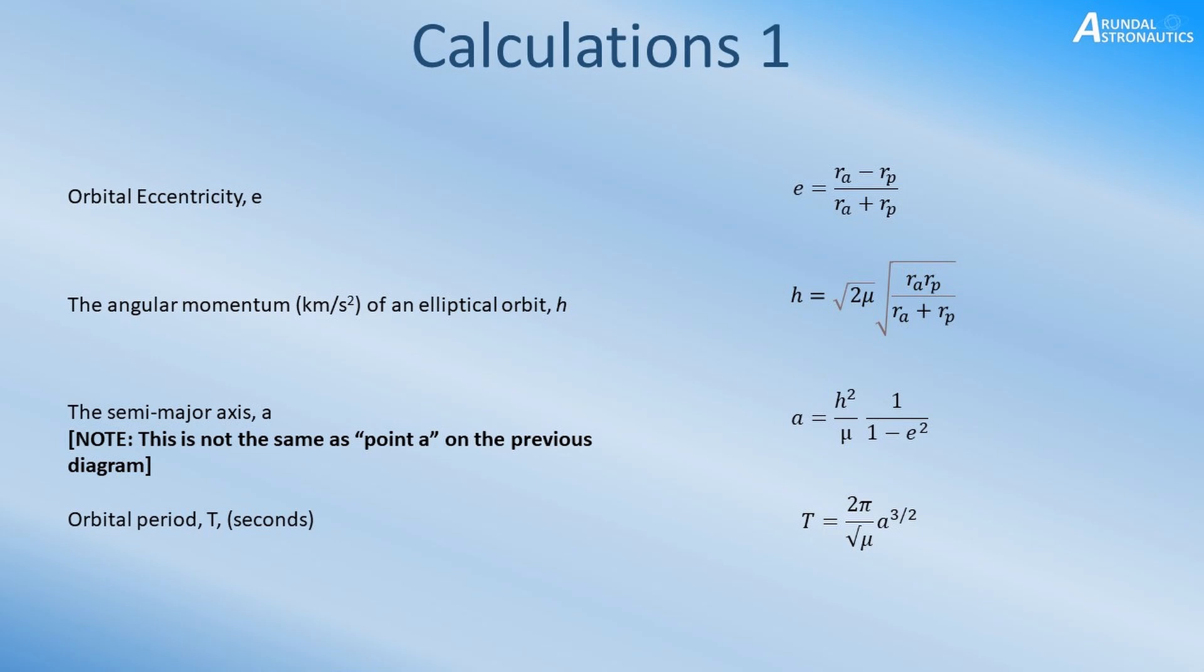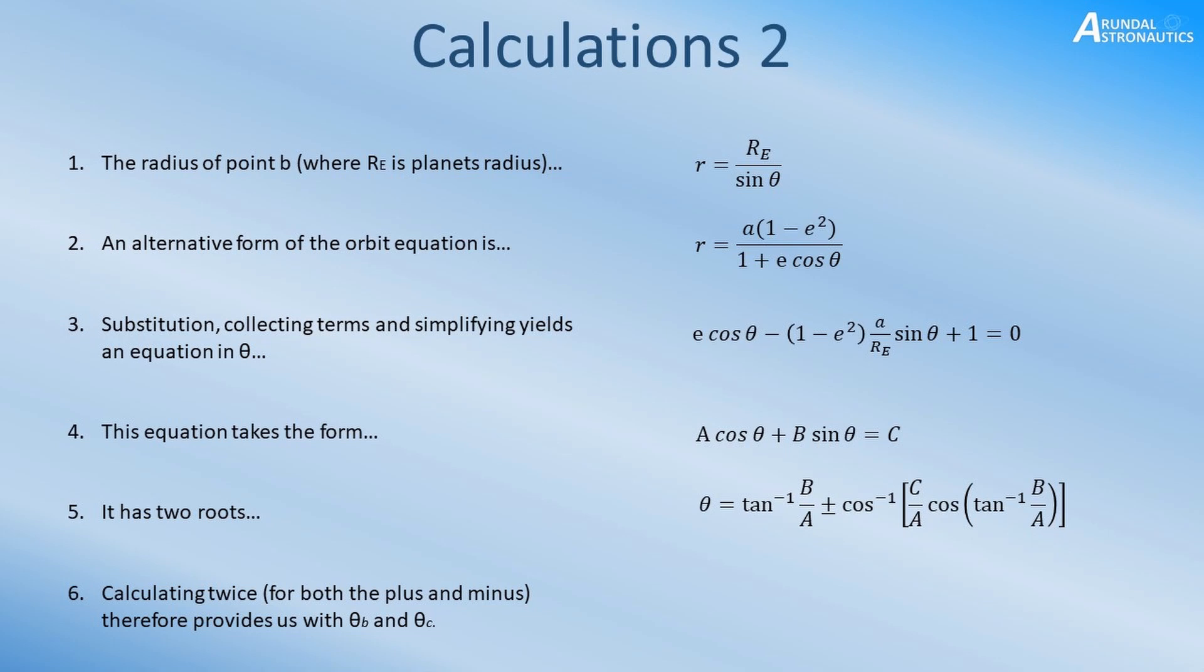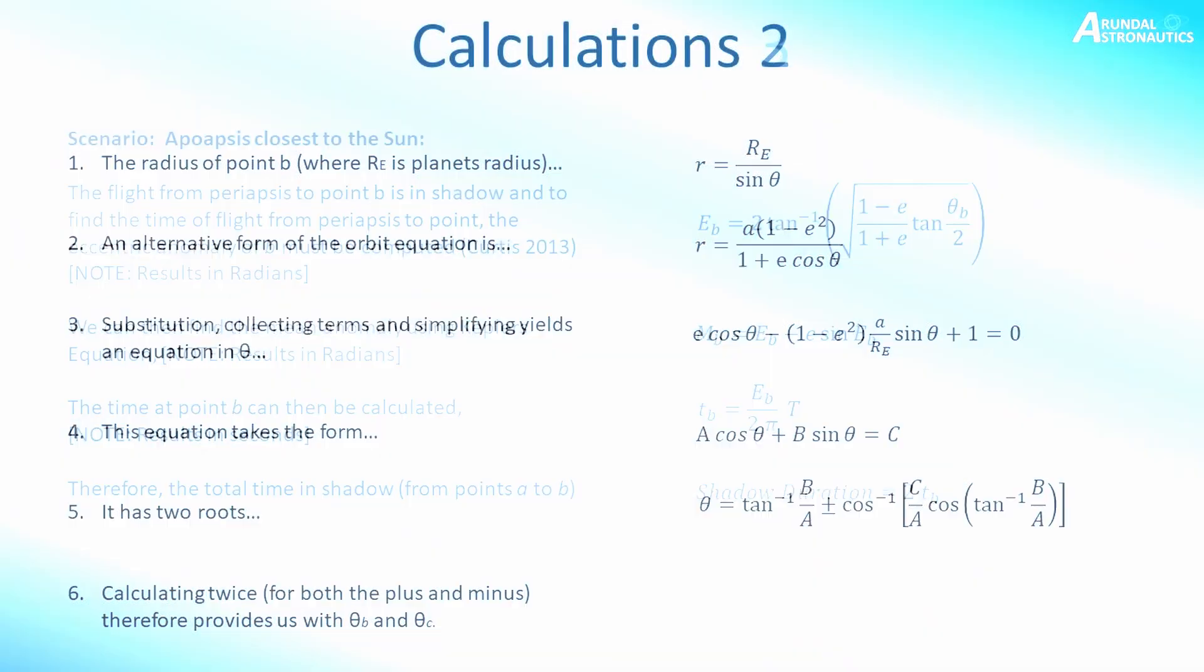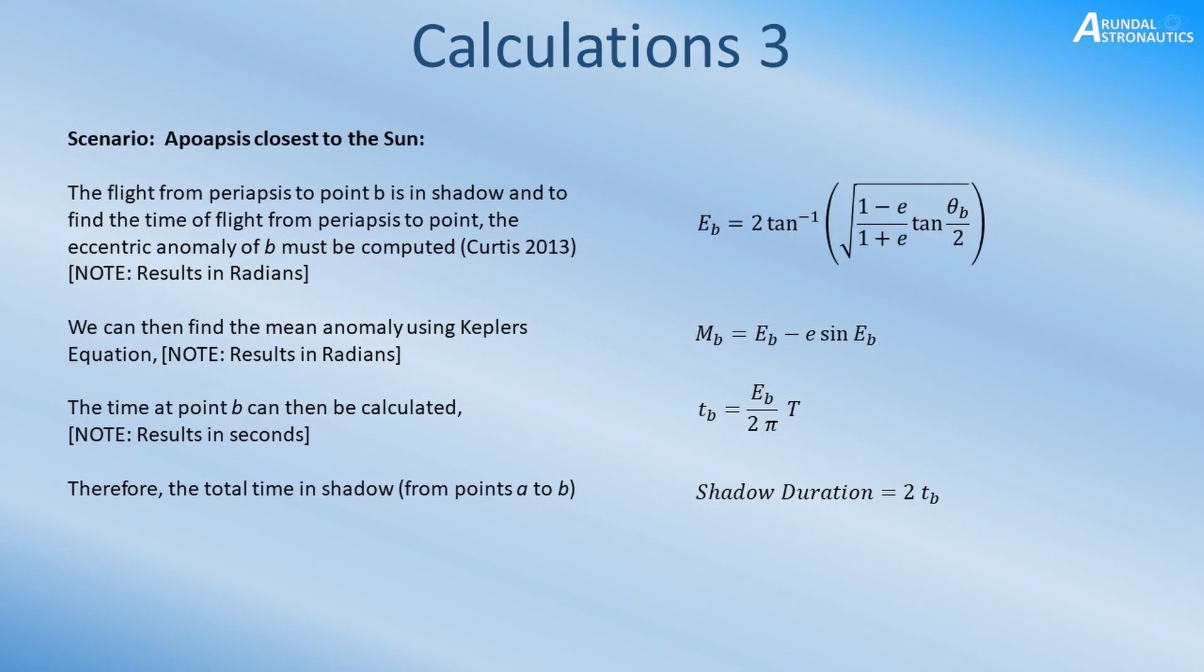In this slide the first four points are mostly for your information to see where the equation in step five comes from, and it's determining these two roots that will lead on to the next stage of the calculations. With the two roots calculated from the previous slide we can now start using these to find the eccentric and mean anomalies and then the time at point B, and with that the total time in shadow and therefore the sunlight time.